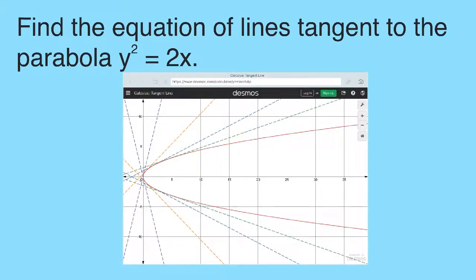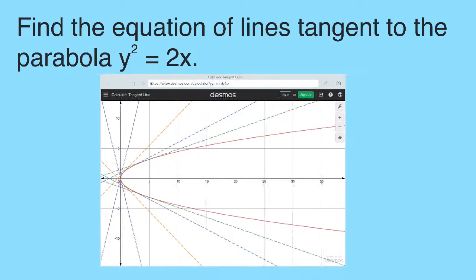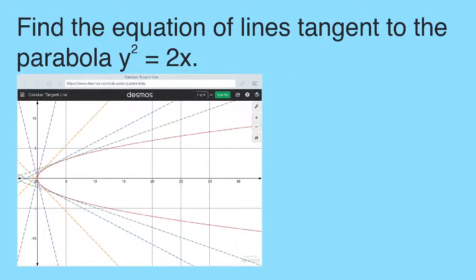Each of these lines has its own equation depending on its slope and point of tangency. Hence, the equation of each line can be represented by the point-slope form of the equation of a line, which is y minus the y coordinate of the point of tangency equals the slope of the tangent line times x minus the x coordinate of the point of tangency.